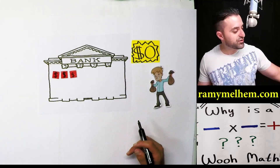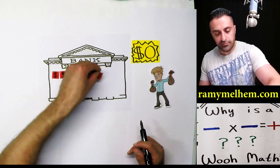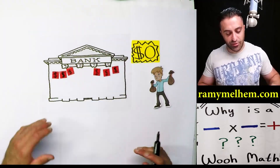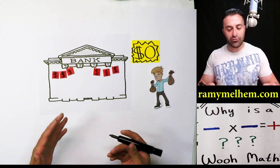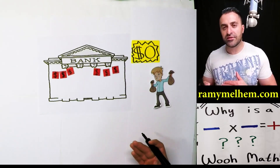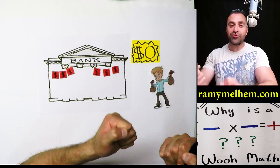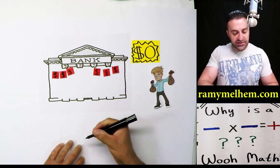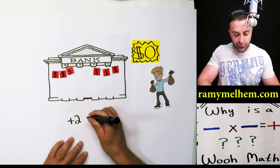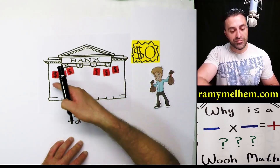He earns $3. And on the second lawn, he earns $3 more. So our multiplication equation at the moment: are we adding groups or subtracting groups? We're adding groups — he's getting paid. We're saying he added two groups of $3.